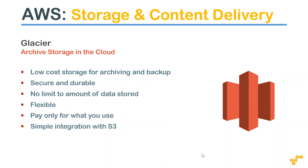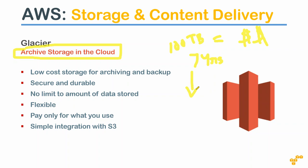Glacier is archival storage in the cloud. Medical, insurance, and financial companies sometimes need to store data for seven years due to compliance requirements. If you're generating 100 TB of data and want to store it for seven years at lowest cost, Glacier is the option. The trade-off is retrieval time - when you put something in Glacier you cannot retrieve it immediately; you have to wait about 3-6 hours.